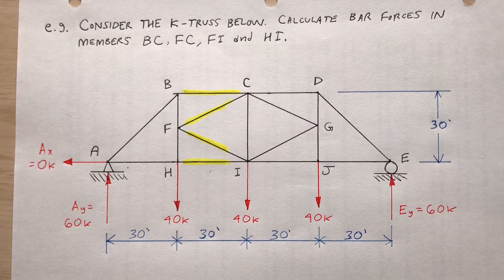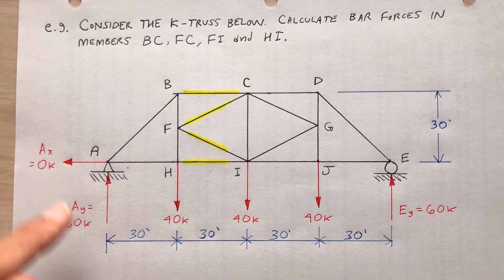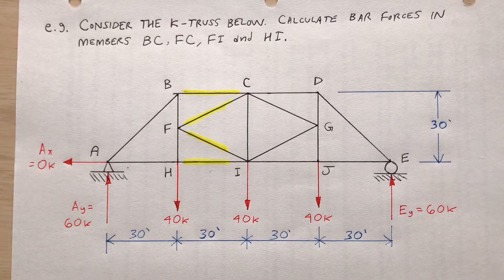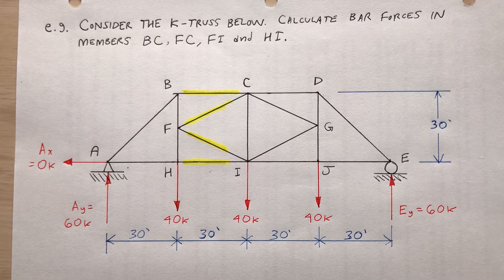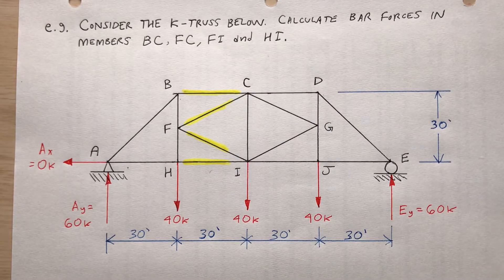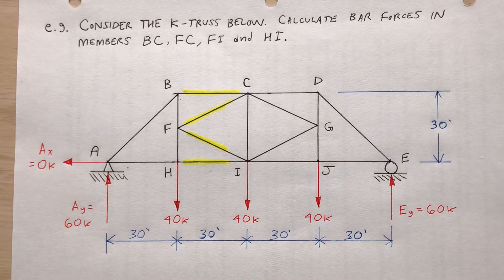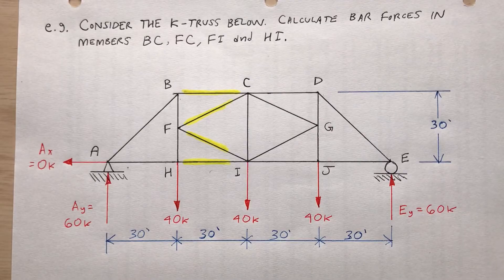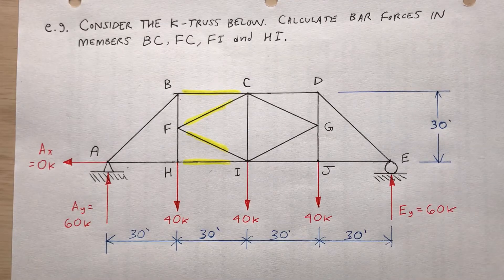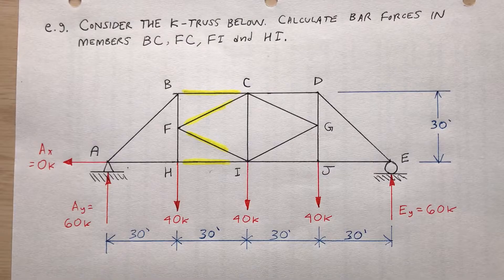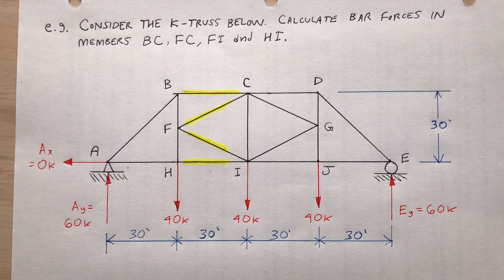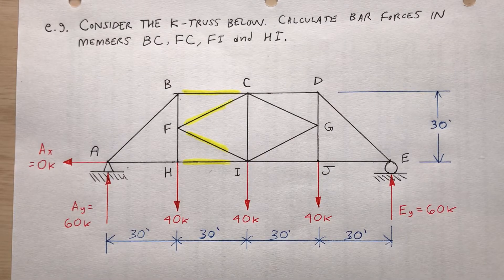Take note of all the dimensions. I've already calculated the reactions at the supports. As you can see, it's symmetric. Usually with a K truss, it's more than just four sections, usually longer than this, but I'm trying to keep this quick and simple. And if you're in my structural analysis course, I'd like to move us along here. So a simple K truss.